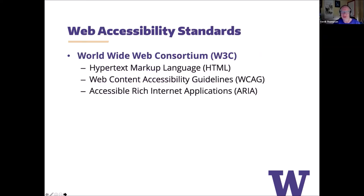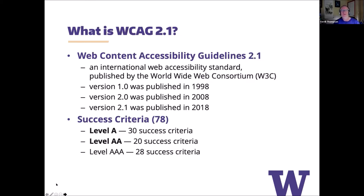Most web standards are owned by the World Wide Web Consortium, or W3C. HTML is an example. From an accessibility standpoint, the Web Content Accessibility Guidelines (WCAG), as well as Accessible Rich Internet Applications (ARIA), are all guidelines or standards that the W3C maintains. WCAG is essentially the standard for web accessibility — an international web accessibility standard that's been around since 1998. Version 2.0 was published in 2008, and version 2.1 in 2018 is the most current version. There is state policy requiring all state agencies, including higher education institutions, to comply with WCAG 2.1.